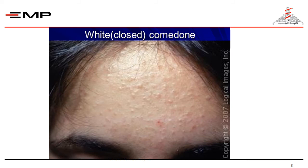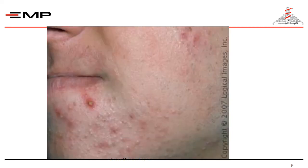This slide shows the white or closed comedones — these are white papules that lack inflammation beneath the surface of the skin. This next image shows pustules and inflammatory papules, along with closed comedones.